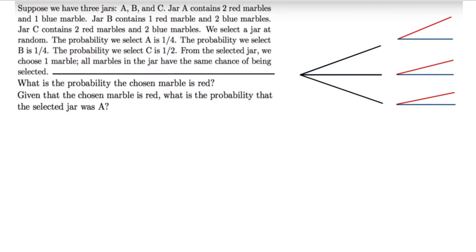Based on this information, we're asked two questions. The first part is: what is the probability that the chosen marble is red? So first, let's complete this tree diagram because that will help us determine the answers to these questions.